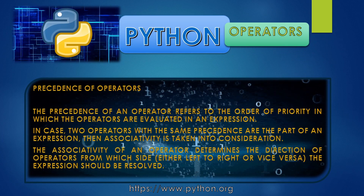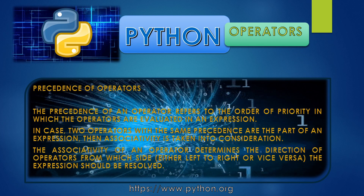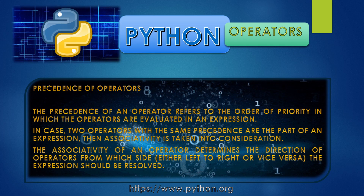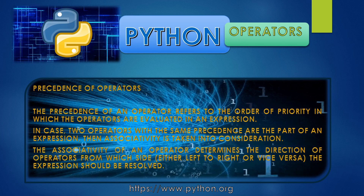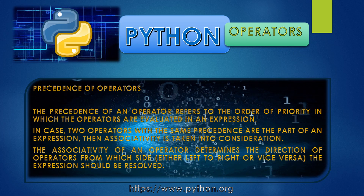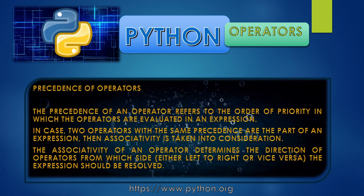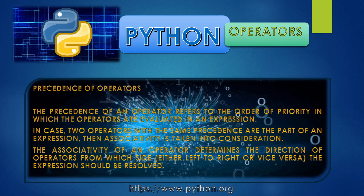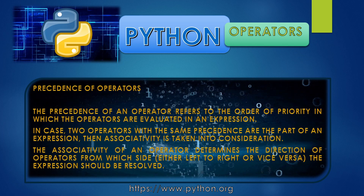After all these operators, we need to understand the precedence of operators. The precedence of an operator refers to the order of priority in which operators are evaluated in an expression — what should be calculated first. In case two operators with the same precedence are part of an expression, associativity is taken into consideration. Associativity determines the direction — either left to right or right to left — in which the expression should be resolved.